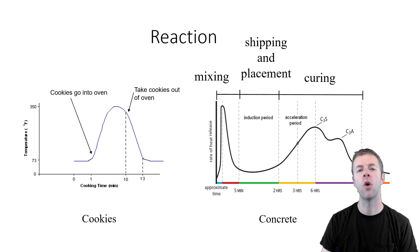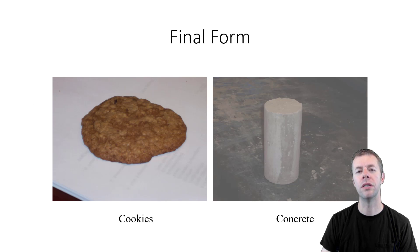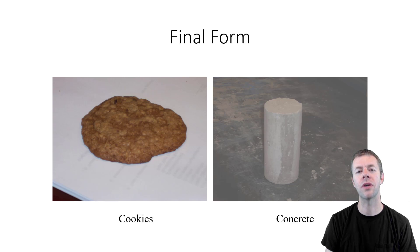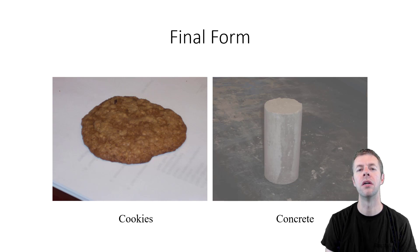Both of these things go from a liquid to a solid. The final form of a cookie is a solid, and the final form of concrete is a solid structure — I'm showing a cylinder here, but it could be any structure. We both want them to look nice and look good, though the cookie probably has to look a little bit better than concrete does.